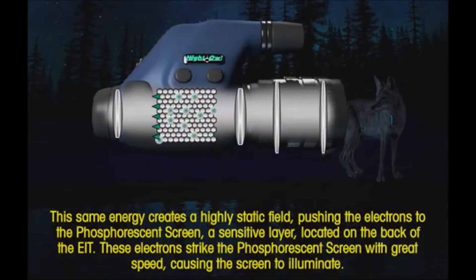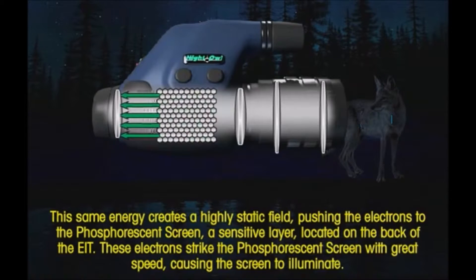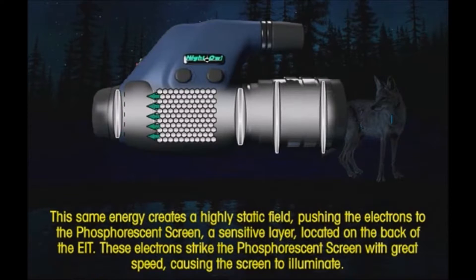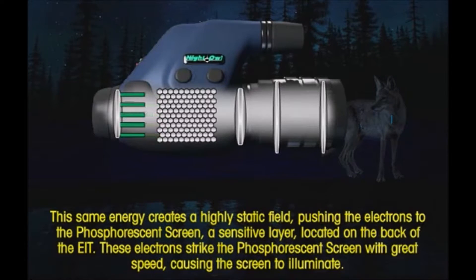This same energy creates a highly static field, pushing the electrons to the phosphorescent screen, a sensitive layer located on the back of the EIT. These electrons strike the phosphorescent screen with great speed, causing the screen to illuminate.